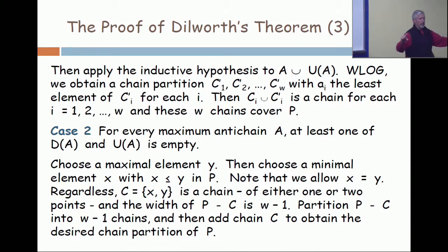Case one, I take this anti-chain and there's something up here and there's something down here. In case two, there isn't such an anti-chain. So that means when I take a maximal element and a minimal element that's less than or equal and pull those away, you can't find an anti-chain of the same size. The width has gone down.